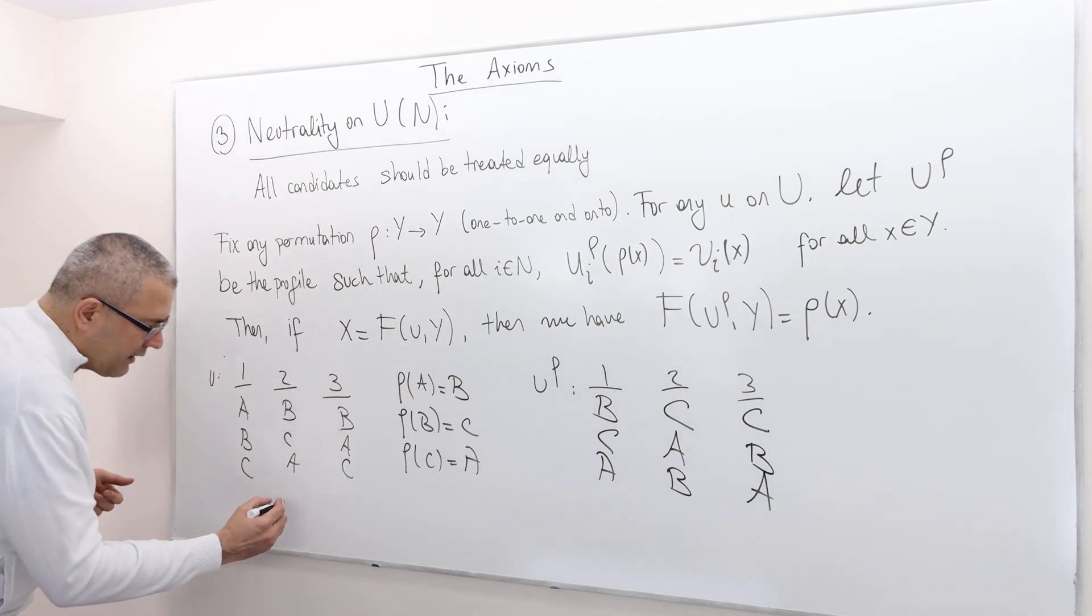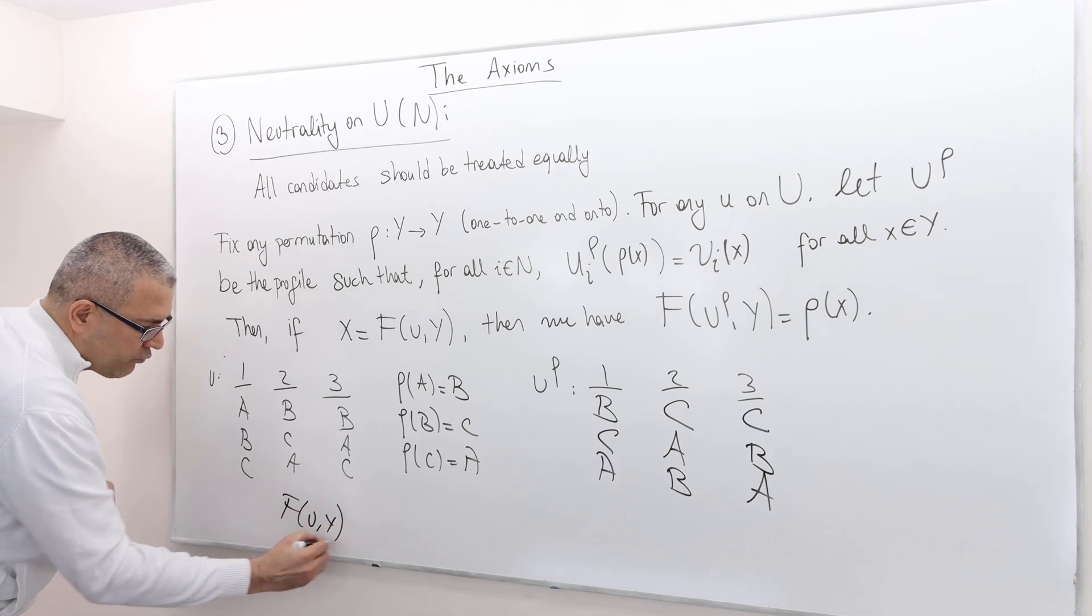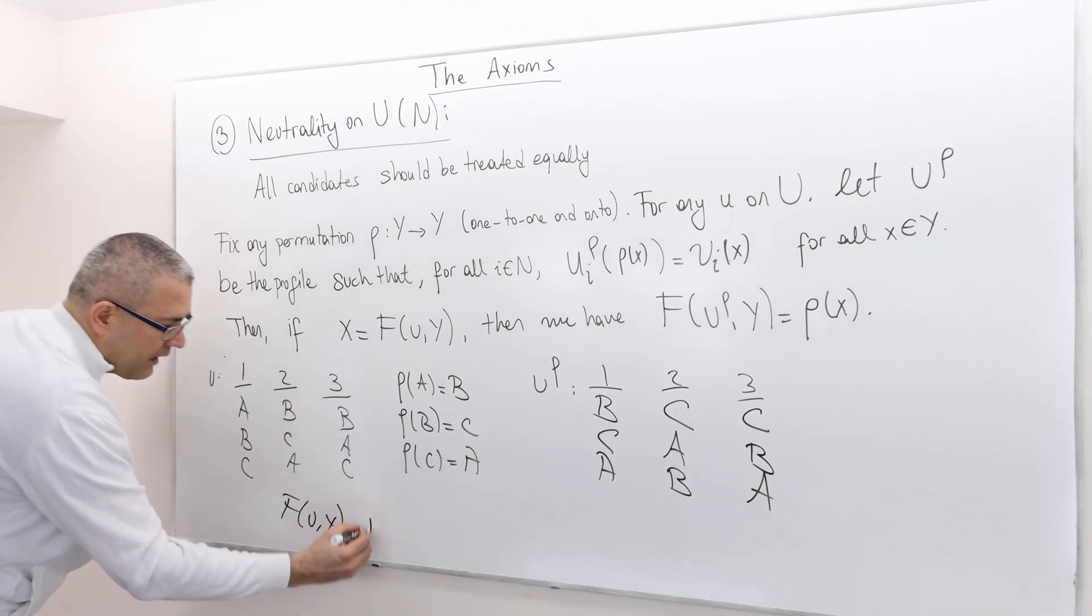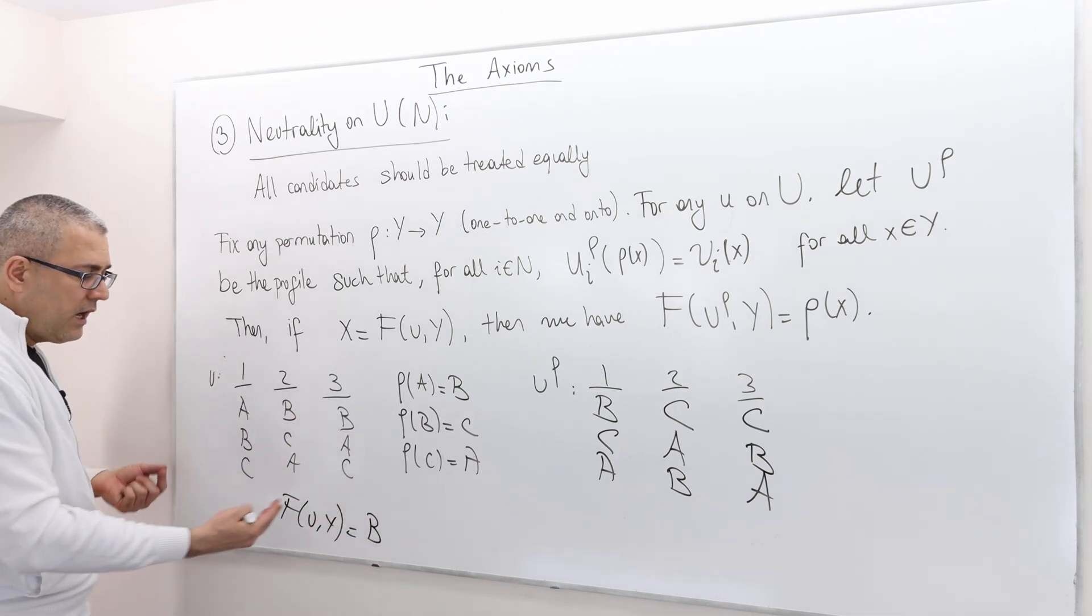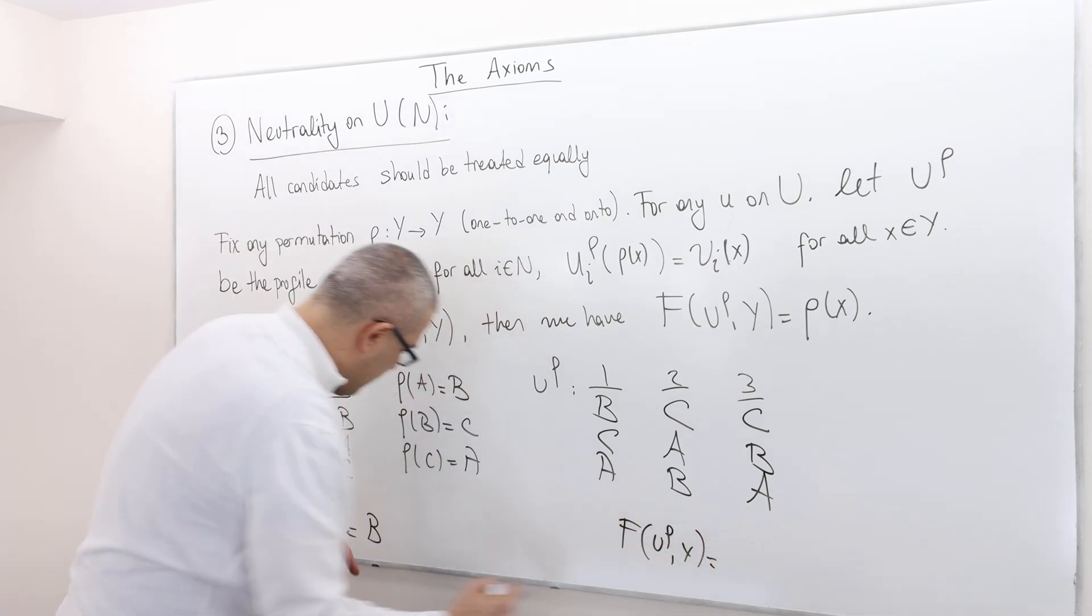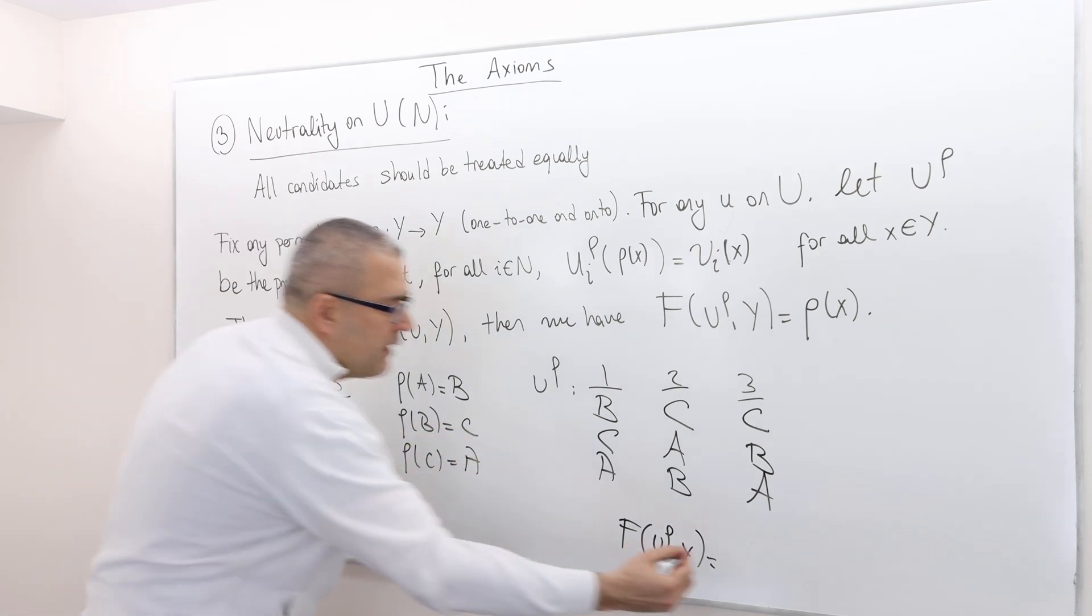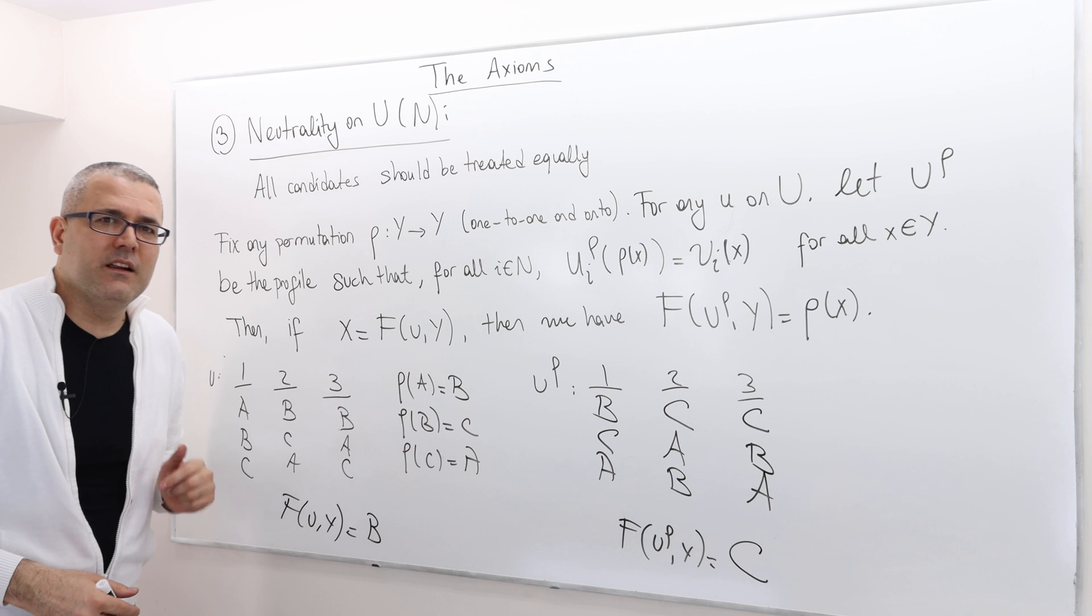C is the old B. And so, this is exactly what this property says. If this rule is selecting, for example, B here, well, it should select the new B. I'm sorry, B is now C, so it should select C here.